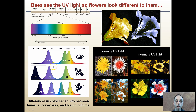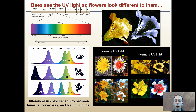What we see versus what bees are able to see: differences in color sensitivity between humans, honeybees, and hummingbirds is what causes flowers to actually look different. Under normal light, we see this as a consistently yellow flower. However, under UV light, this is almost like a target region that develops in the center, and that's what the bees are going to see and target to find the pollen or the nectar.